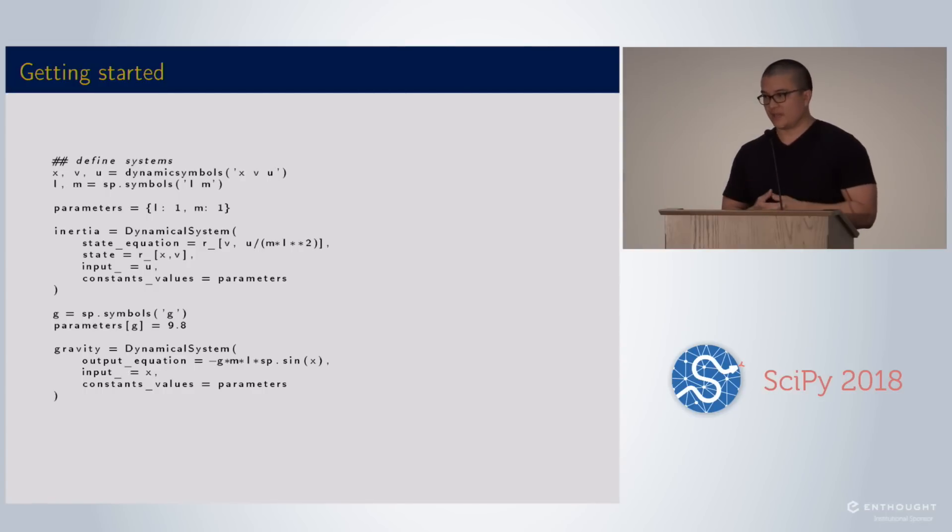If you declare your symbols from SimuPy, you have the dynamic symbols which would be basically signals, your state variables, or forces that are being transmitted. You could have constant parameters. Then you tell it what your state equations are. I've written a symbolic version of the np.r_ underscore, creating an array of expressions. So it's the same X dot equals V and V dot equals U over ML squared. Your state is X and V. The input is U. You can define your parameters.